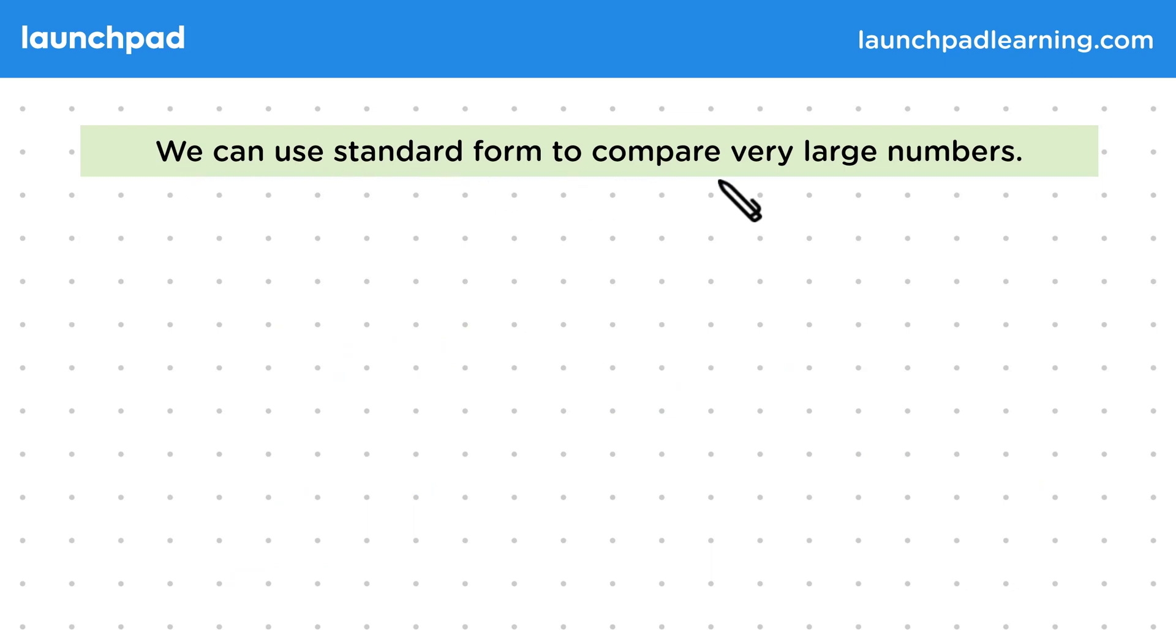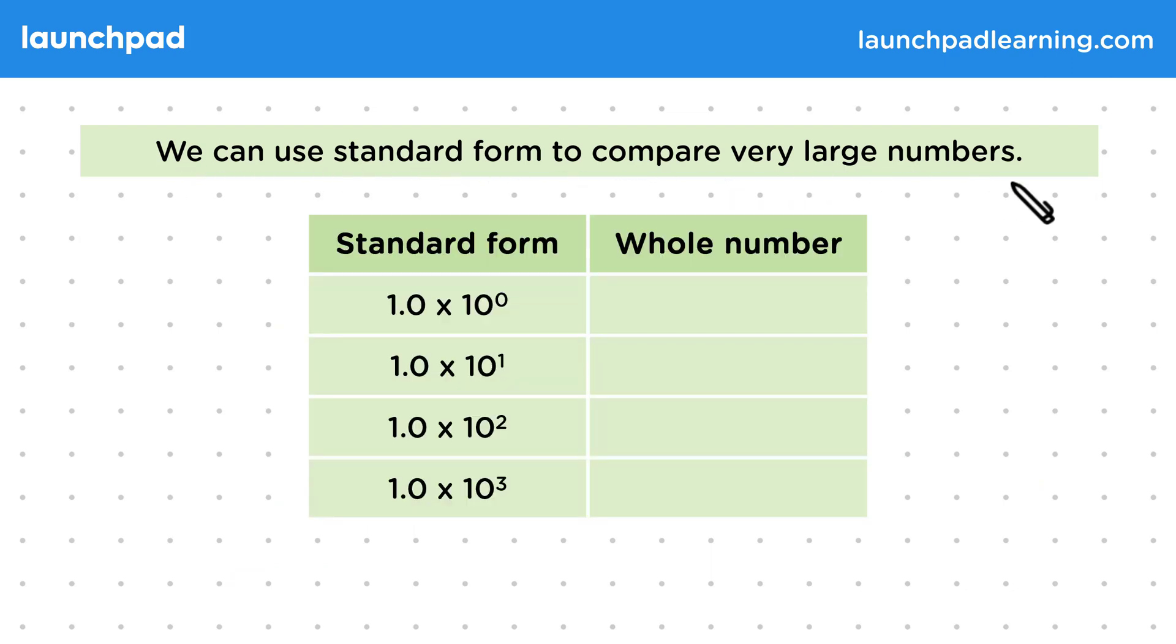We can use standard form to compare very large numbers. This table gives examples of large numbers in standard form. If the power of 10 is positive, the number is large. Positive powers shift the digit to the left. So what do we mean by shifting the digit to the left? Let's fill in the table and see.